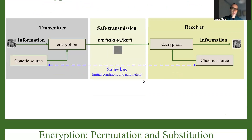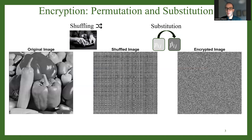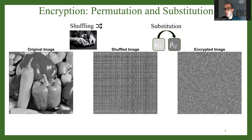The classic process of encryption includes permutation, which is the shuffling of the image pixels, and substitution, which is taking each separate pixel in the image and substituting its value with another value.